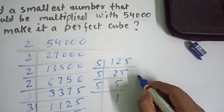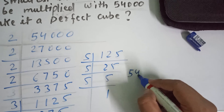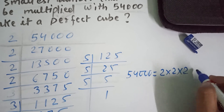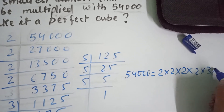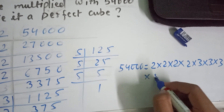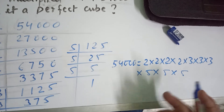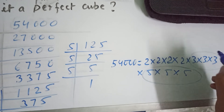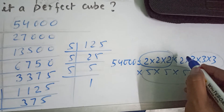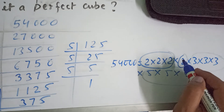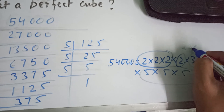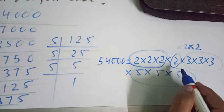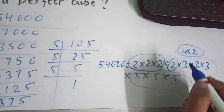We need to write it in the proper manner. So 54,000 = 2 × 2 × 2 × 2 × 2 × 3 × 3 × 3 × 5 × 5 × 5. Now we need to make triplets. We can make a triplet of 3s and a triplet of 5s, but 2 appears five times — so two 2s will be left over without a complete triplet. To complete the triplet we need to multiply by 2 × 2.